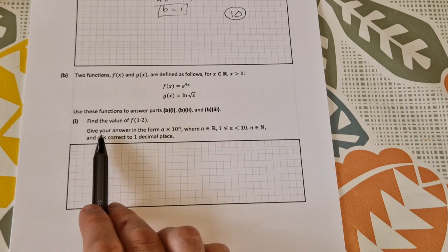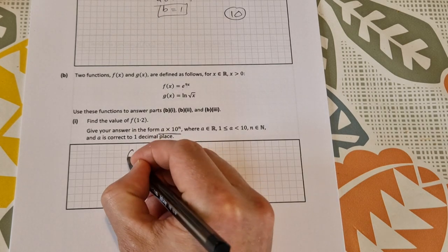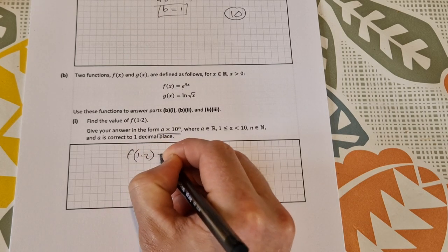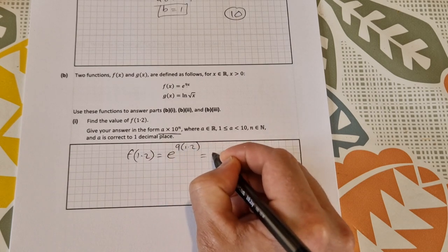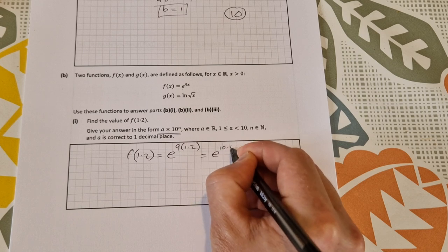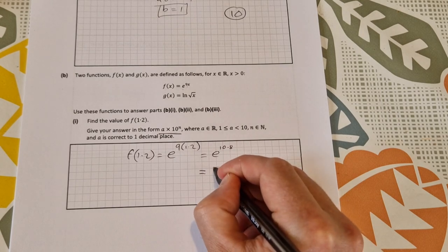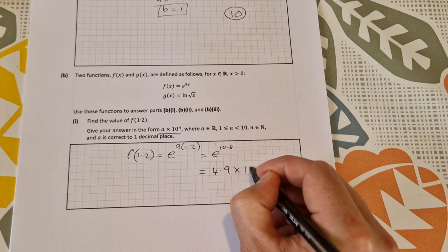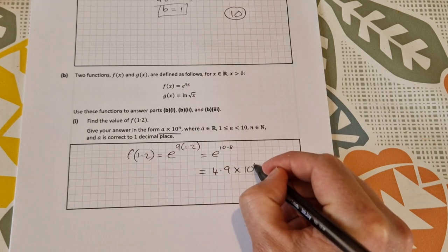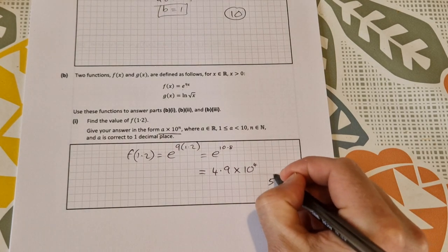Find the value of f(1.2). Give your answer in the form a × 10^x, so that's important to give it in that form. So f(1.2) = e^(9 × 1.2) = e^(10.8), and then you'll pop that into the calculator to get it in the correct form. Your calculator might not give it straight away as 4.9 × 10⁴; it might give it as 49,000, but you can then change that into scientific notation: 4.9 × 10⁴. That's worth 5 marks.